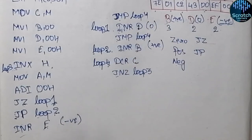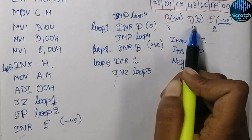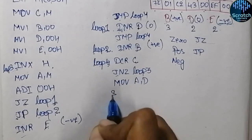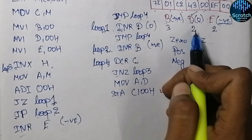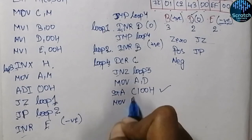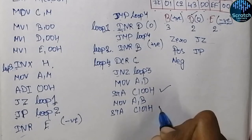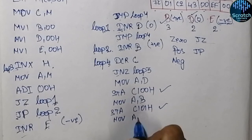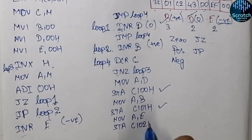Now we need to store the results in memory locations. First for the zero count, we move the content of D into the accumulator using MOV A, D and store it at address C100 hex. Then for the positive count, we move B into the accumulator and store it at address C101 hex. Finally for the negative count, we move E into the accumulator and store it at address C102 hex, then HLT.